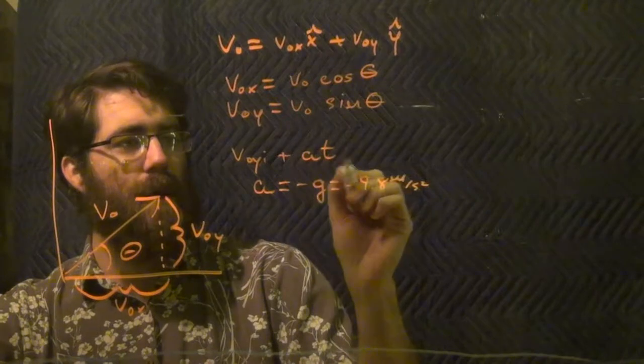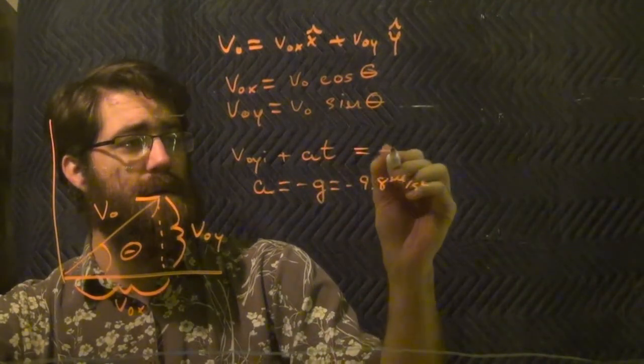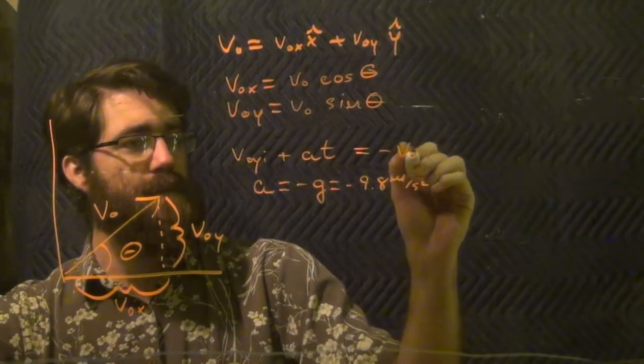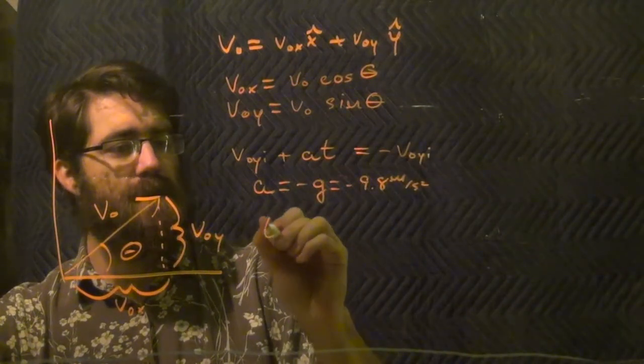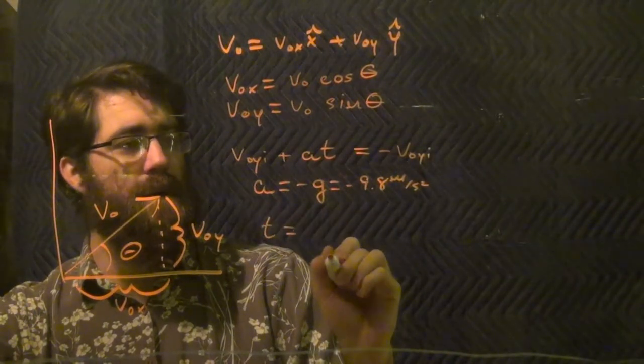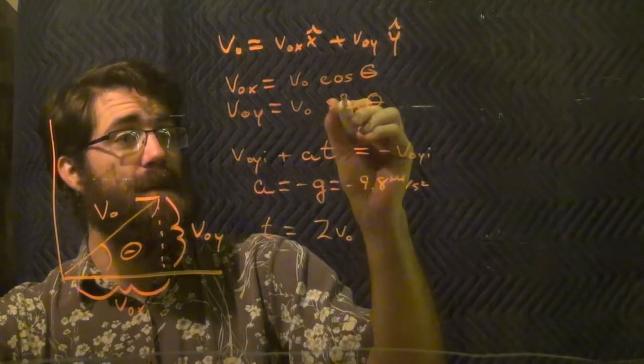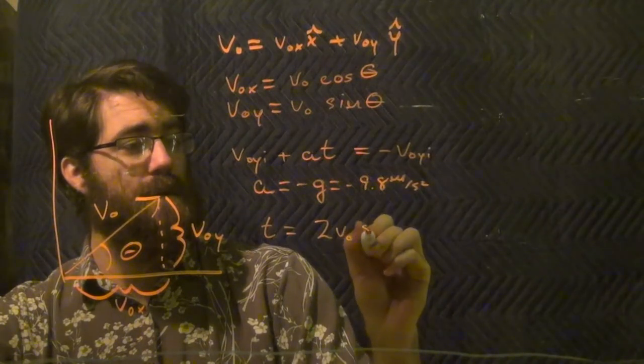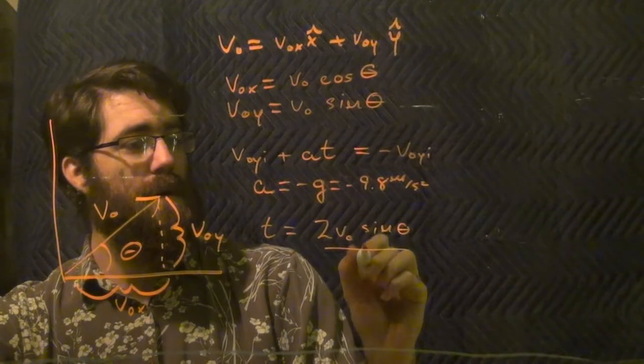And when that equals the negative of the initial velocity, we'll know that it's gone up, come to a stop, and then come back down. Solving for t gives us t equals 2 v-naught sine theta over g.